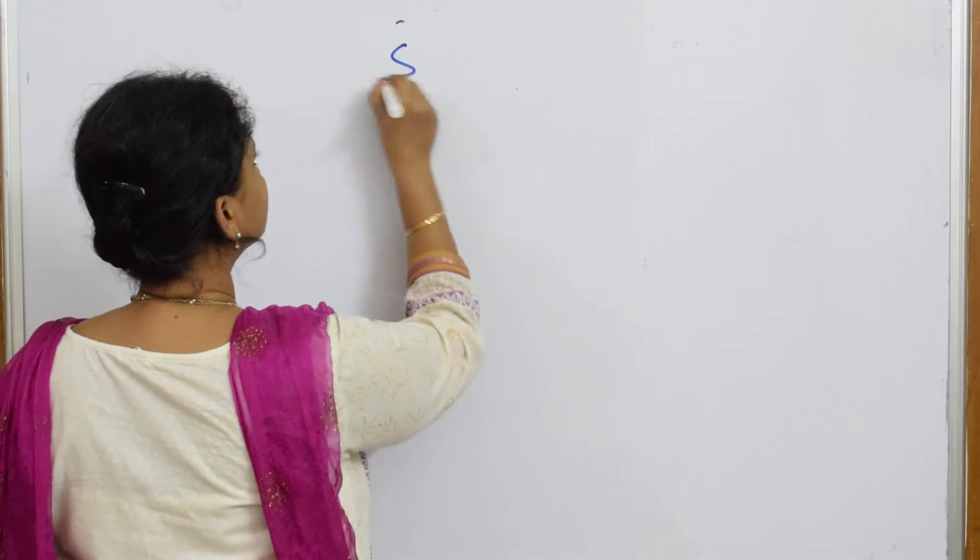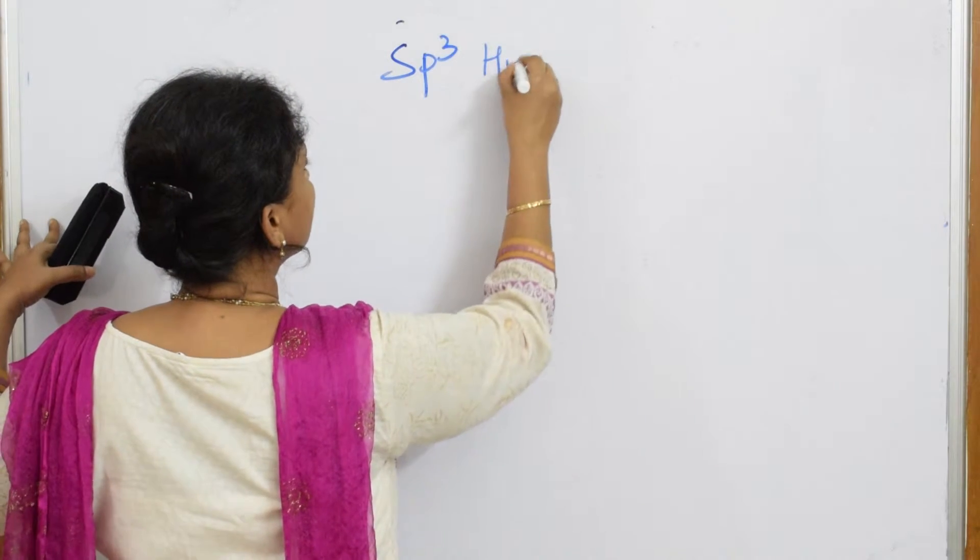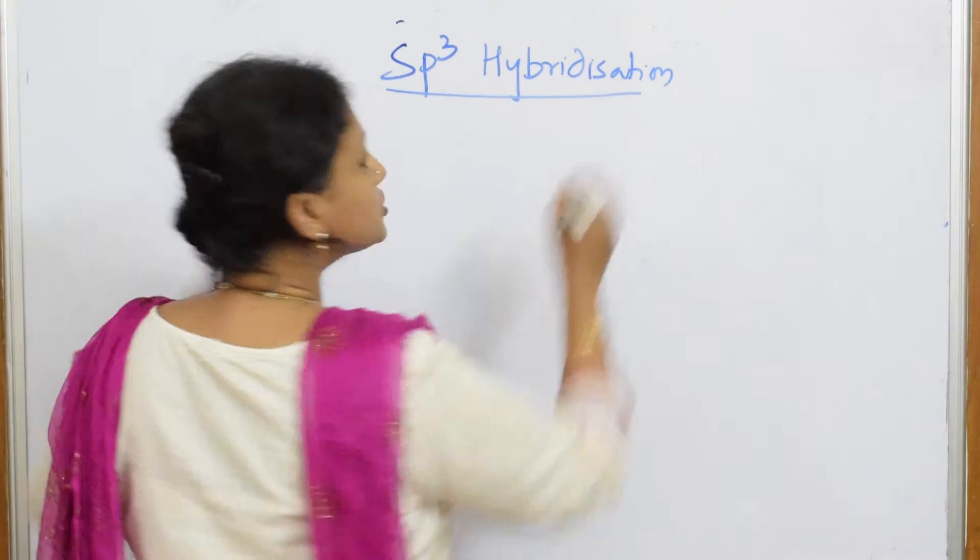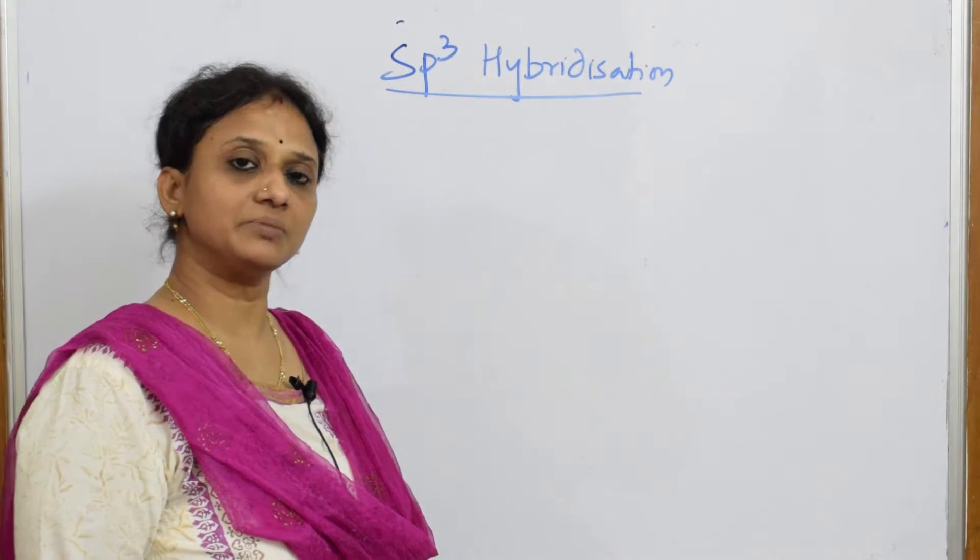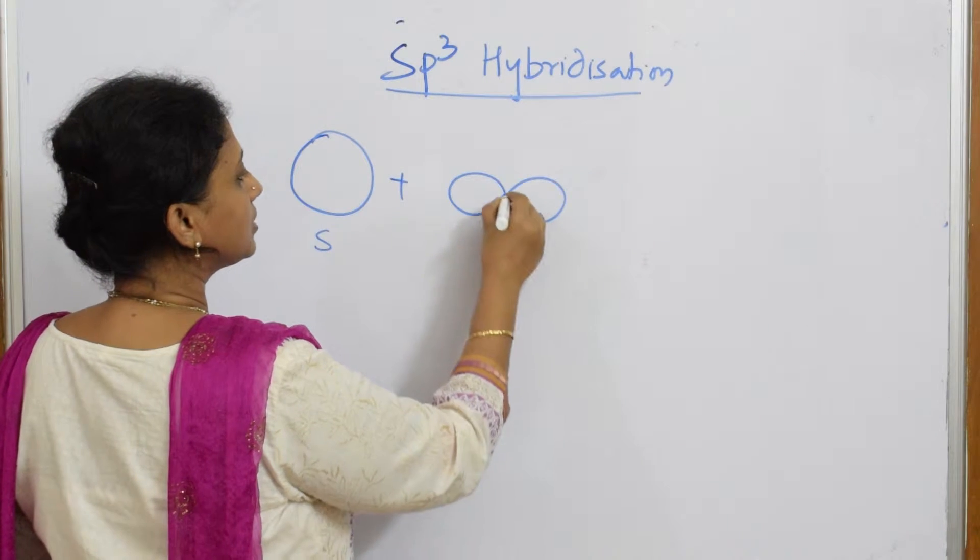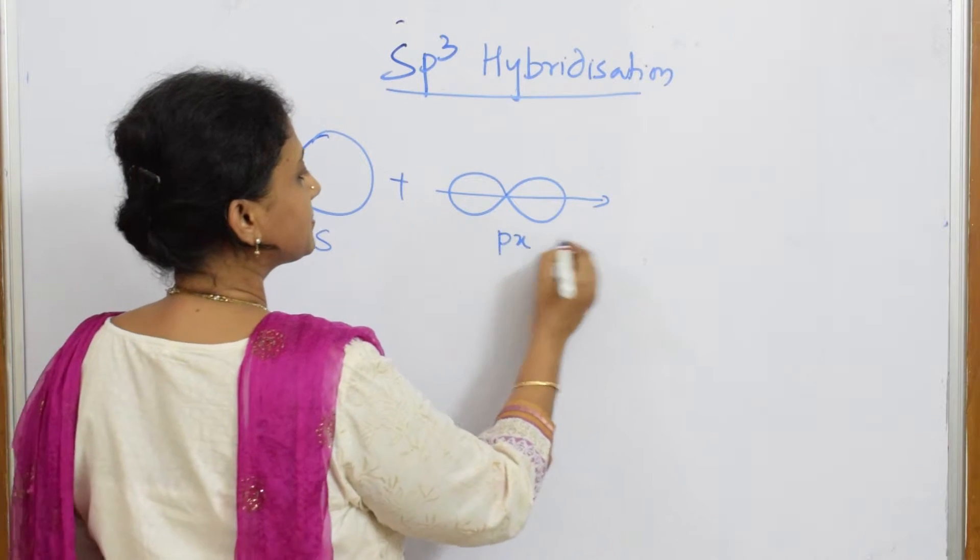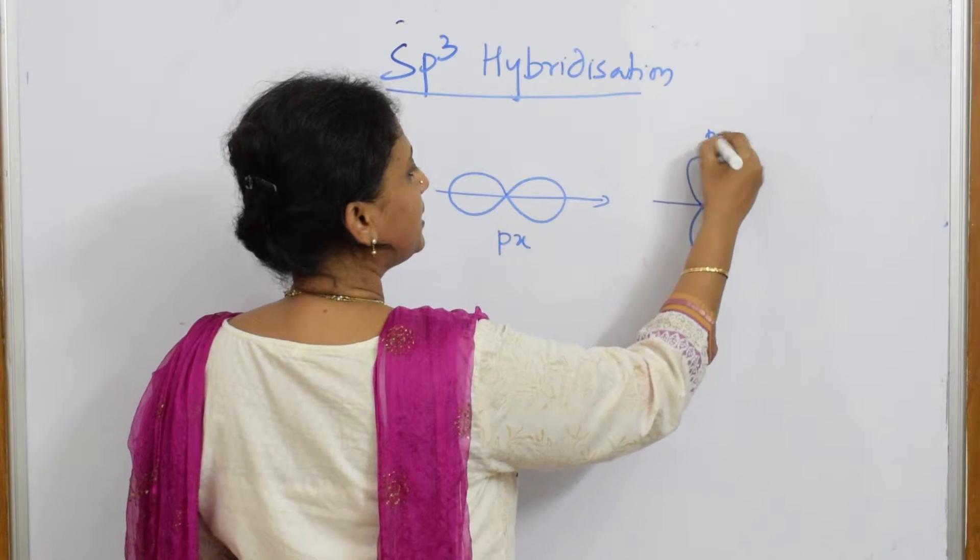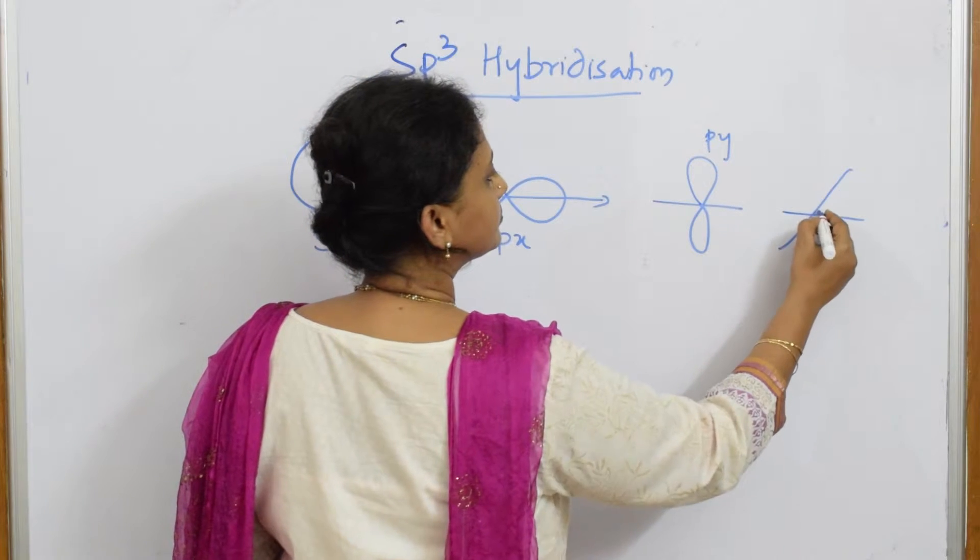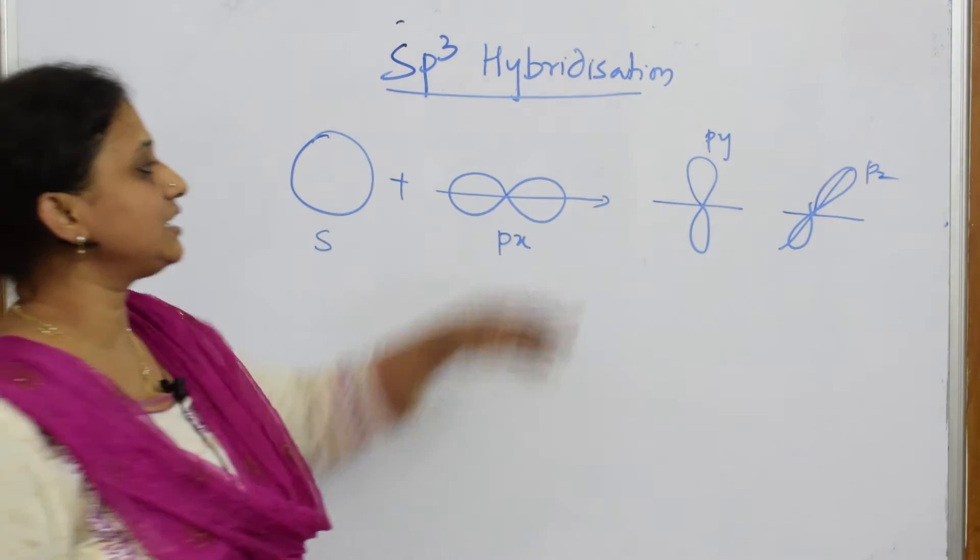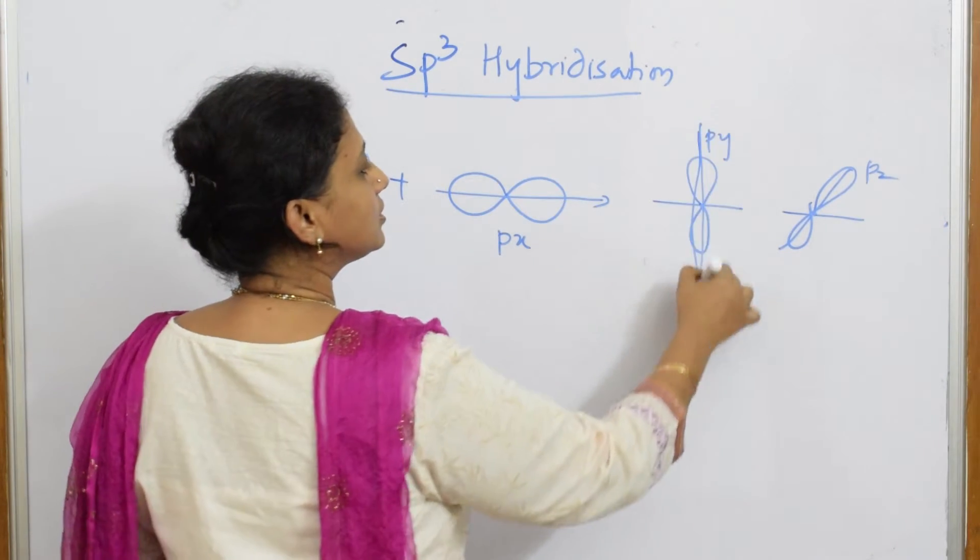Let us start with the third type of hybridization, that is SP3 hybridization. As the name suggests, SP3 hybridization basically we have 1S plus PX, PY and PZ orbitals intermixing. So intermixing of 1S and 3P orbitals is called your SP3 hybridization.